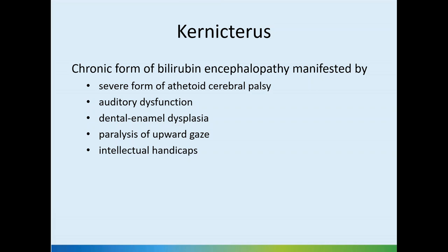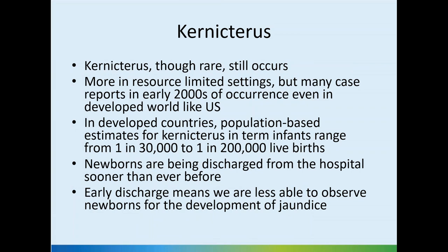Kernicterus is the chronic form of bilirubin encephalopathy. Bilirubin binding in brain areas causes permanent damage, leading to a severe form of athetoid cerebral palsy, sensorineural hearing loss, dental enamel hypoplasia, paralysis of upward gaze, and intellectual handicaps of varying degrees. Thankfully, kernicterus is rare today due to aggressive screening and management, but it still occurs, more often in resource-limited settings. Population-based estimates in term babies in developed countries range from 1 in 30,000 to 1 in 200,000 live births.